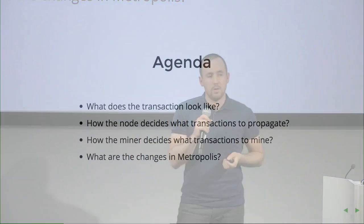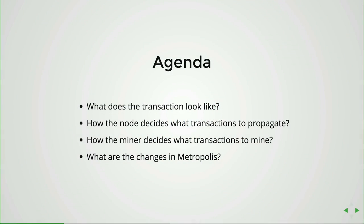First I'll focus on what a transaction looks like and what fields it needs. Then, how a node decides to propagate a transaction, how the miner decides to include a transaction in a block, and finally what changes are coming in the Metropolis release.